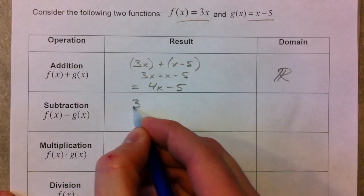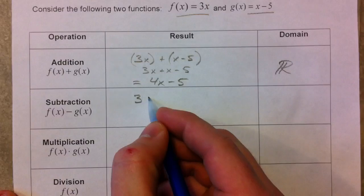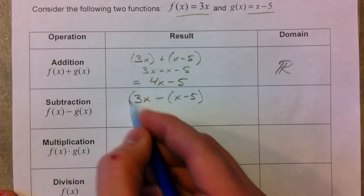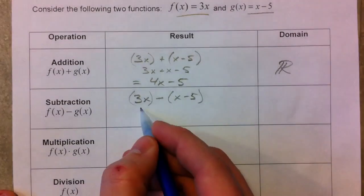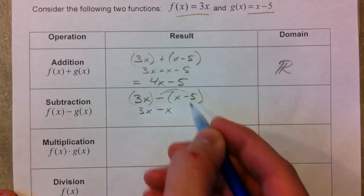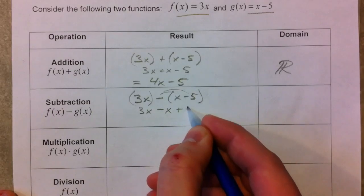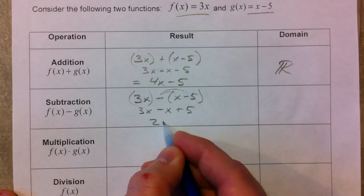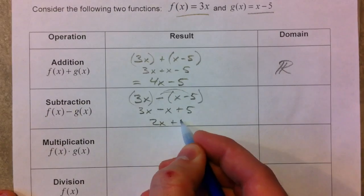Subtraction, so we do f of x minus g of x, 3x minus x minus 5. Just be careful with this one like we did with our polynomials, that this is 3x minus an x, but it's also minus a negative 5, so it really turns out to be plus 5. 3x minus x is 2x plus 5.